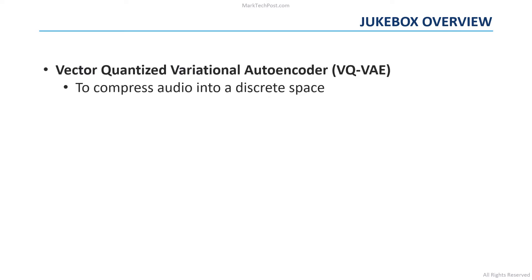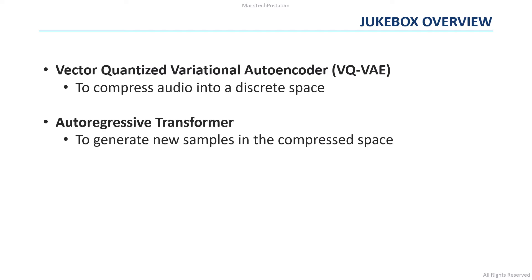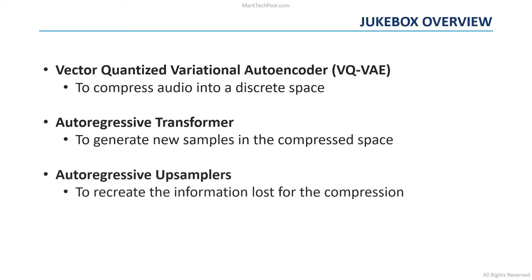Hence, Jukebox is composed of three parts. A vector quantized variational autoencoder is used to compress audio into a discrete space at increasing levels of compression. Then, an autoregressive transformer is trained over this compressed space in order to generate new samples. Finally, autoregressive upsamplers are used to recreate the lost information at each level of compression.